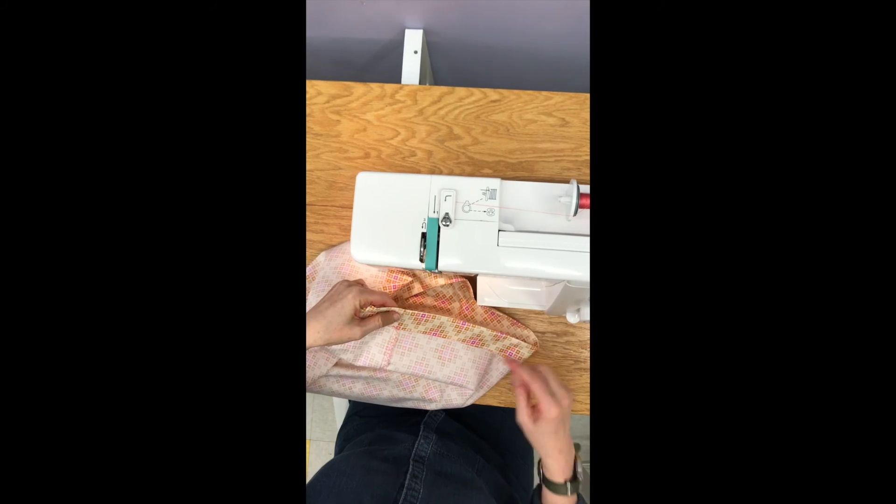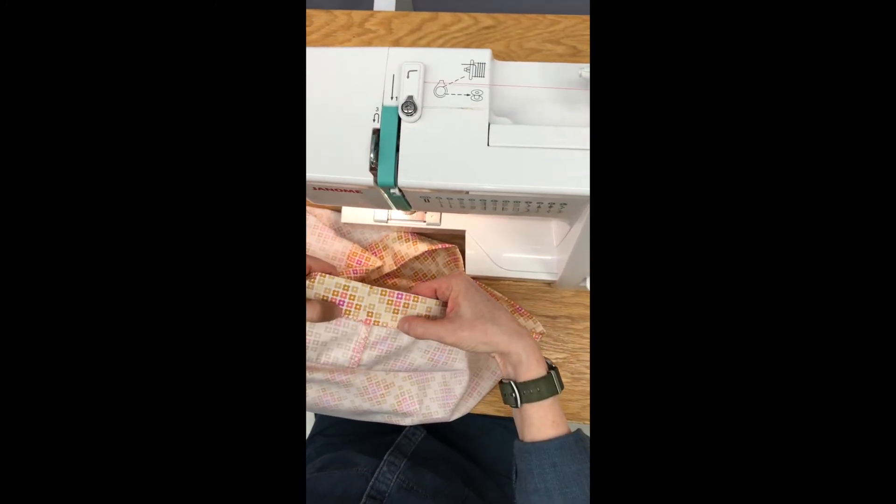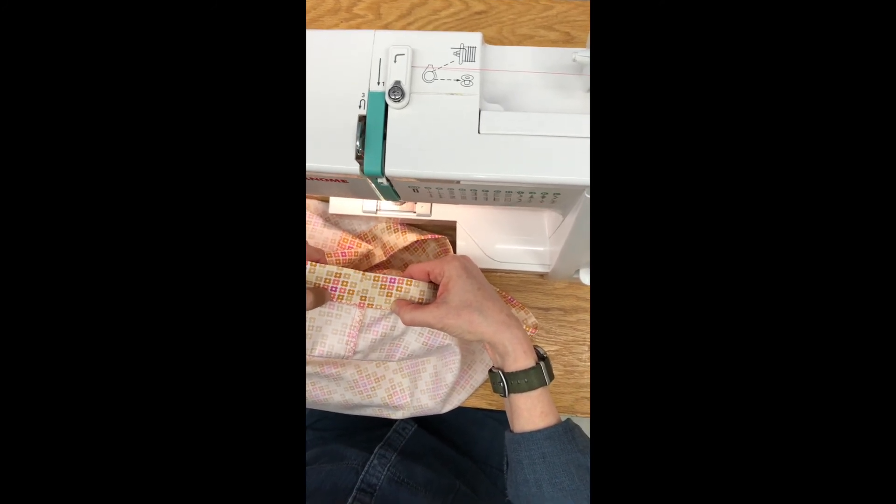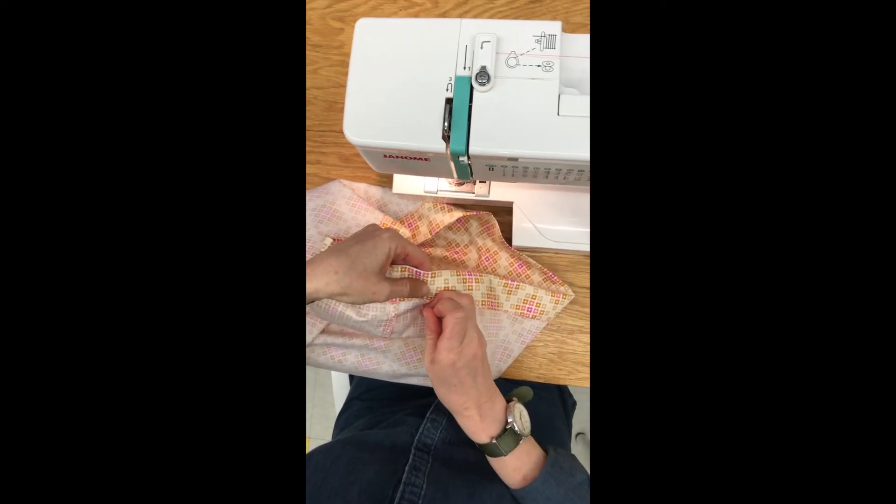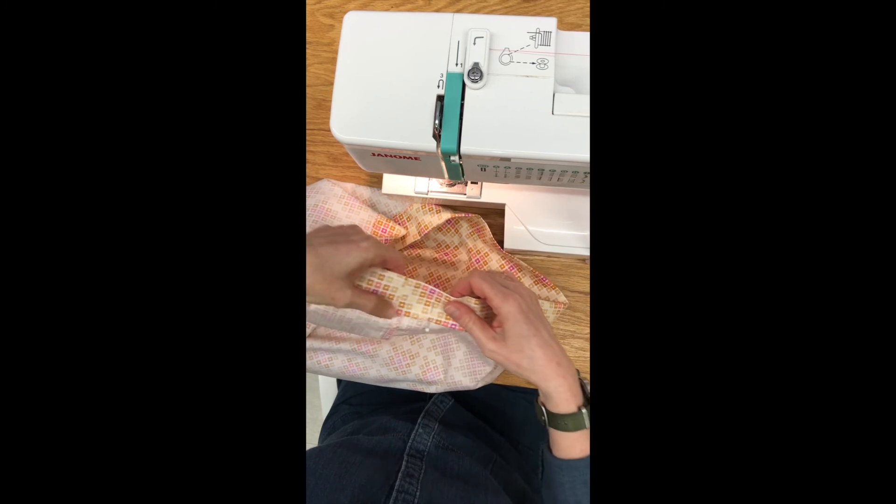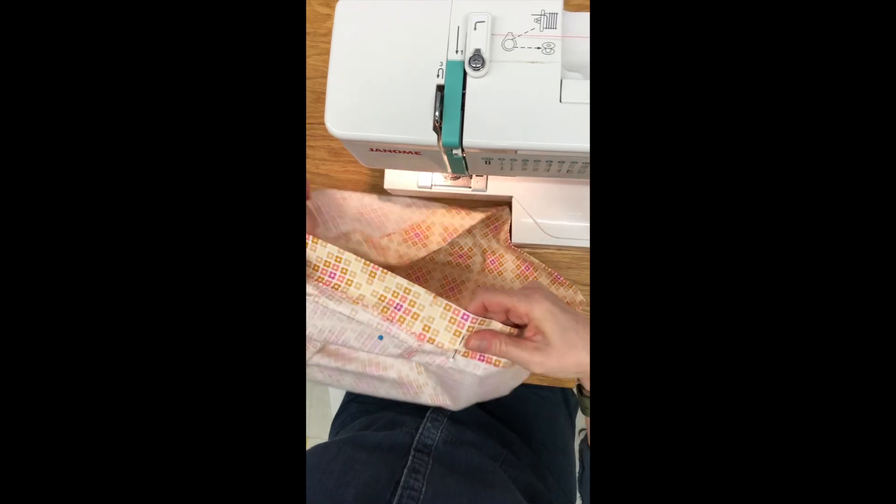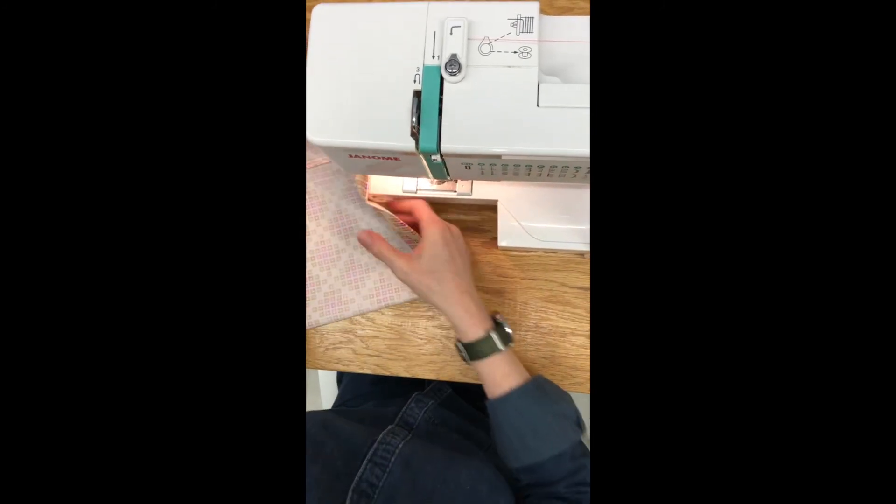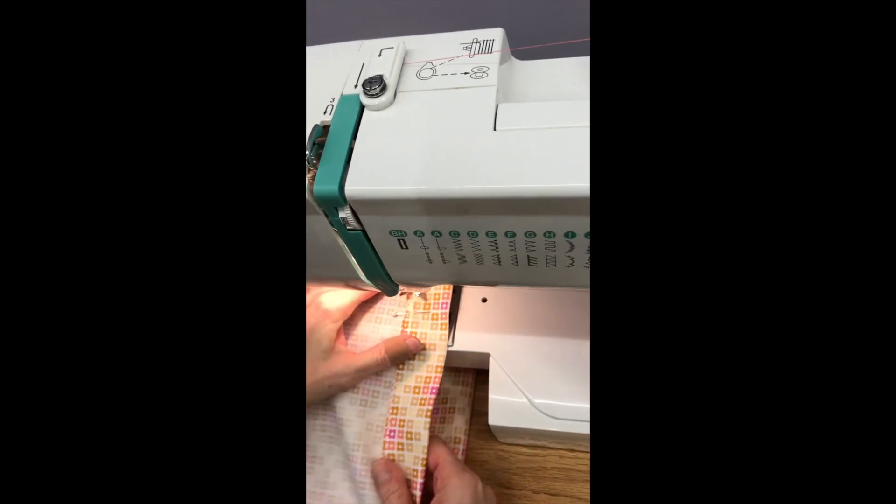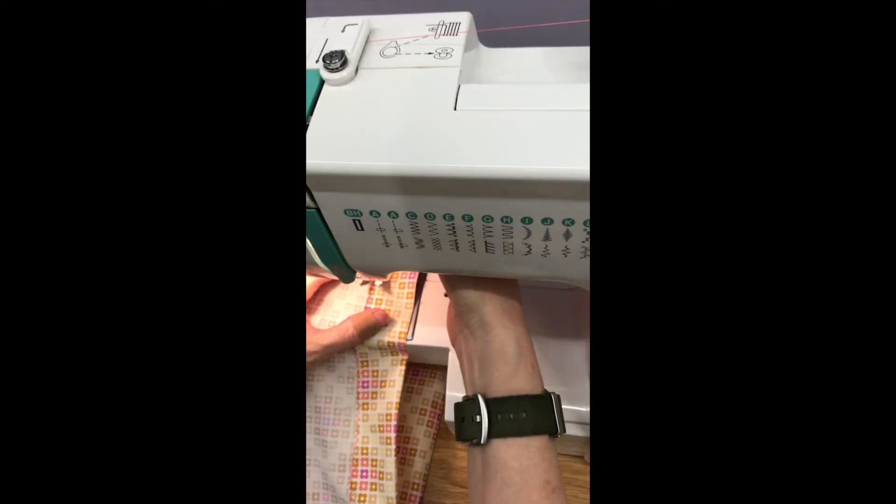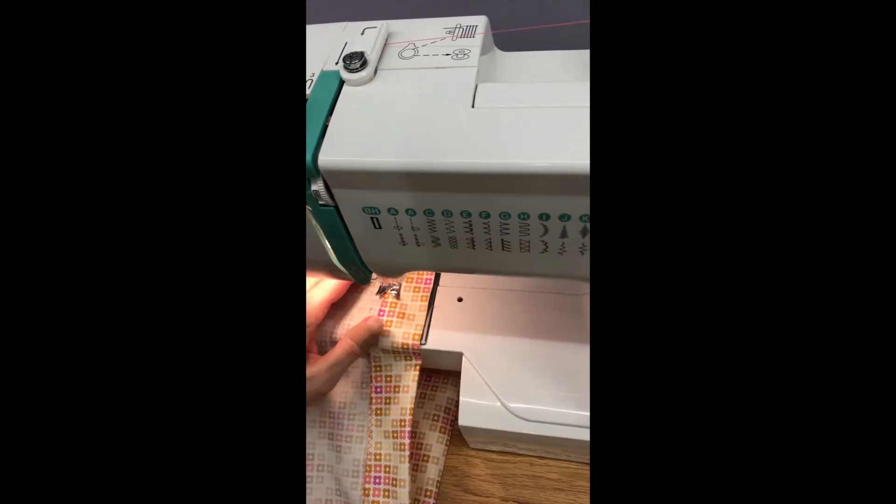The next thing we're going to do is sew down this top edge of our casing, but we need to leave an opening about an inch and a half to two inches so we can feed our elastic through. So what I like to do is put a pin where I'm going to start and then pin where I'm going to stop so I remember to not sew that closed. With a straight stitch, I'm going to aim for about the top peaks of my zigzags right there so I can have this stitched down but still wide enough for my elastic to go through.